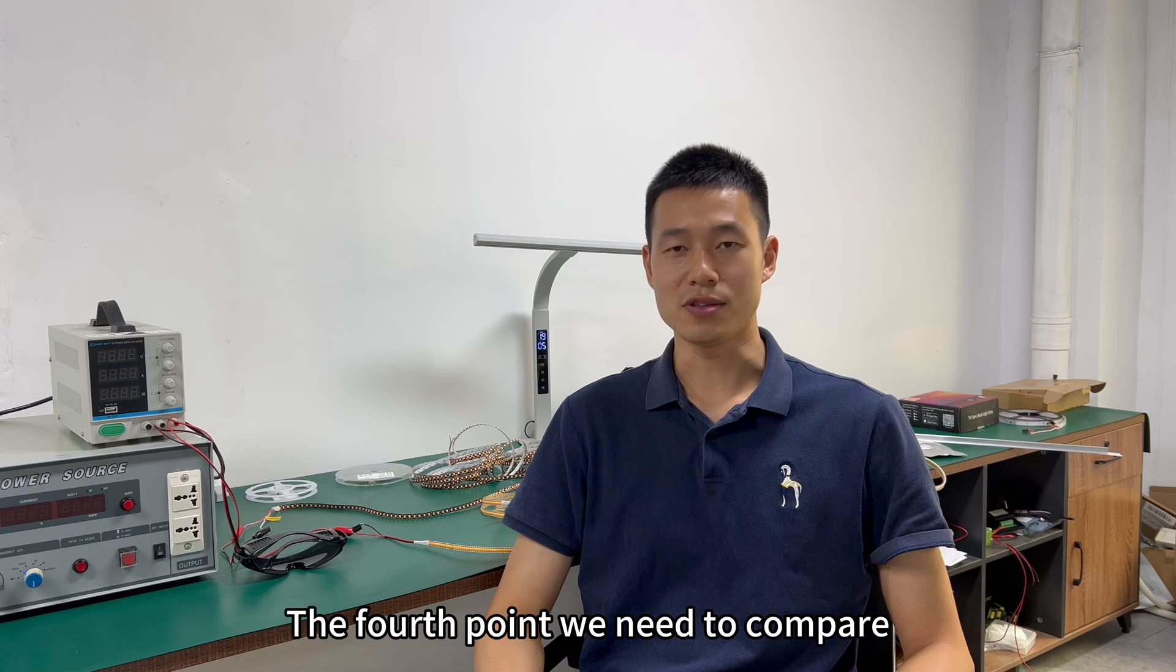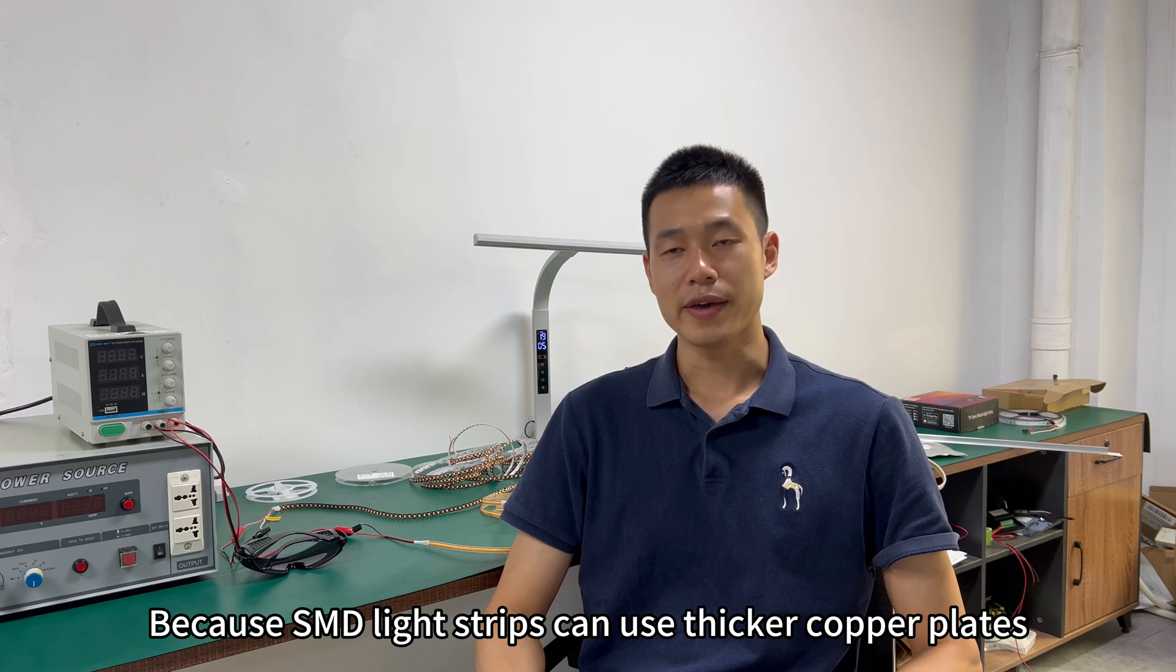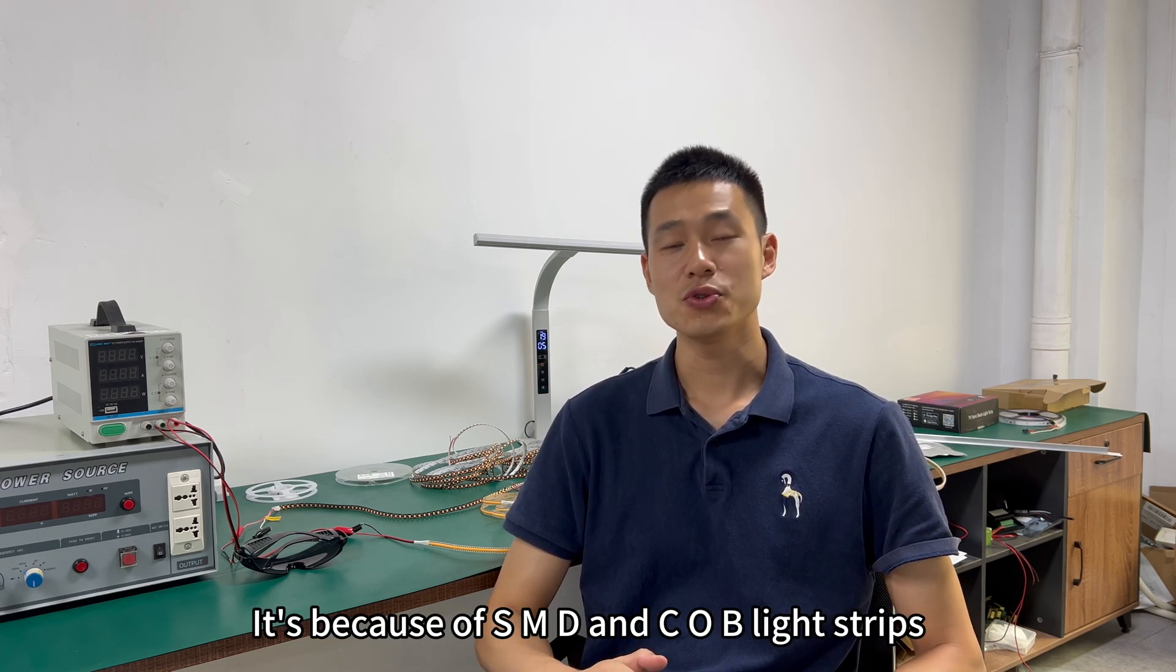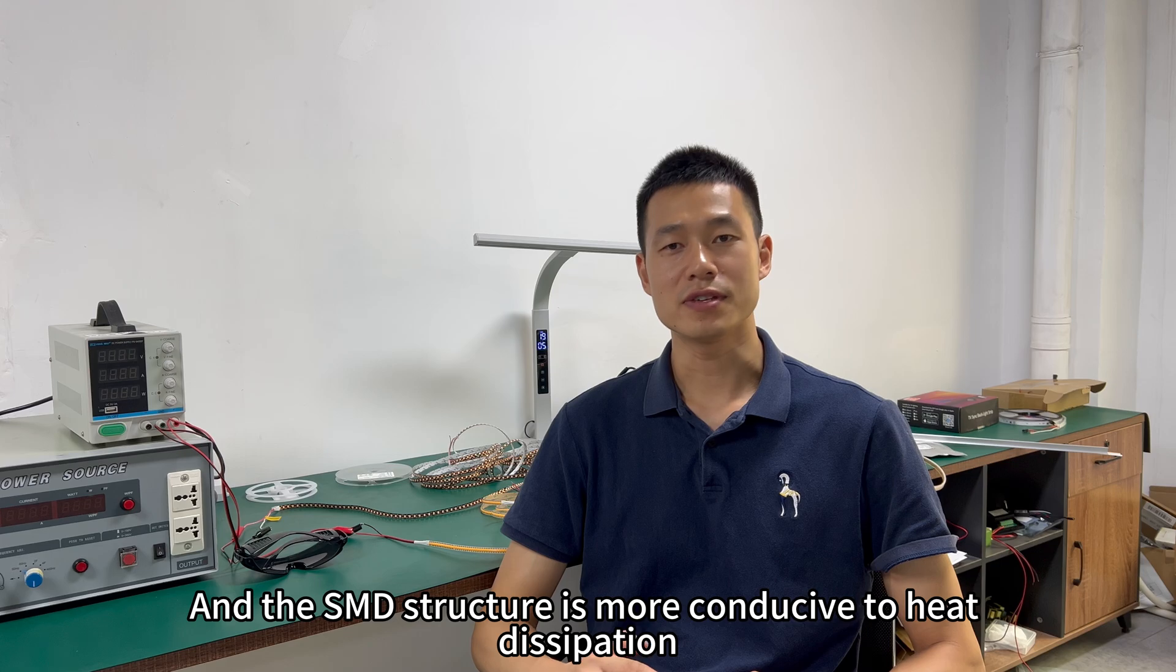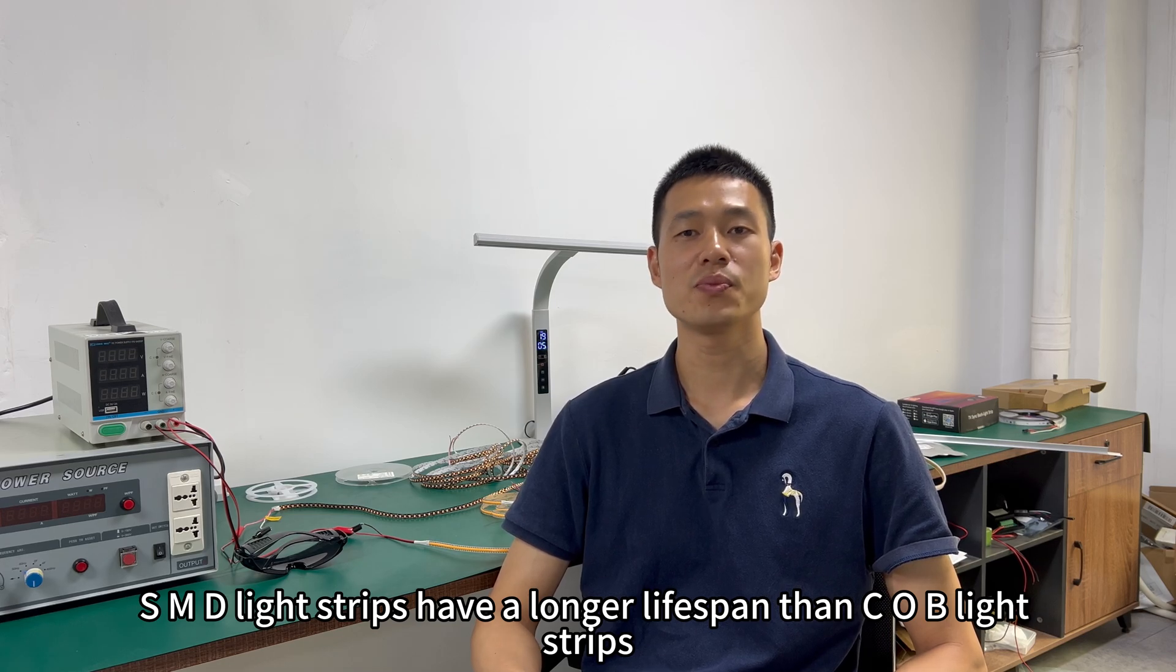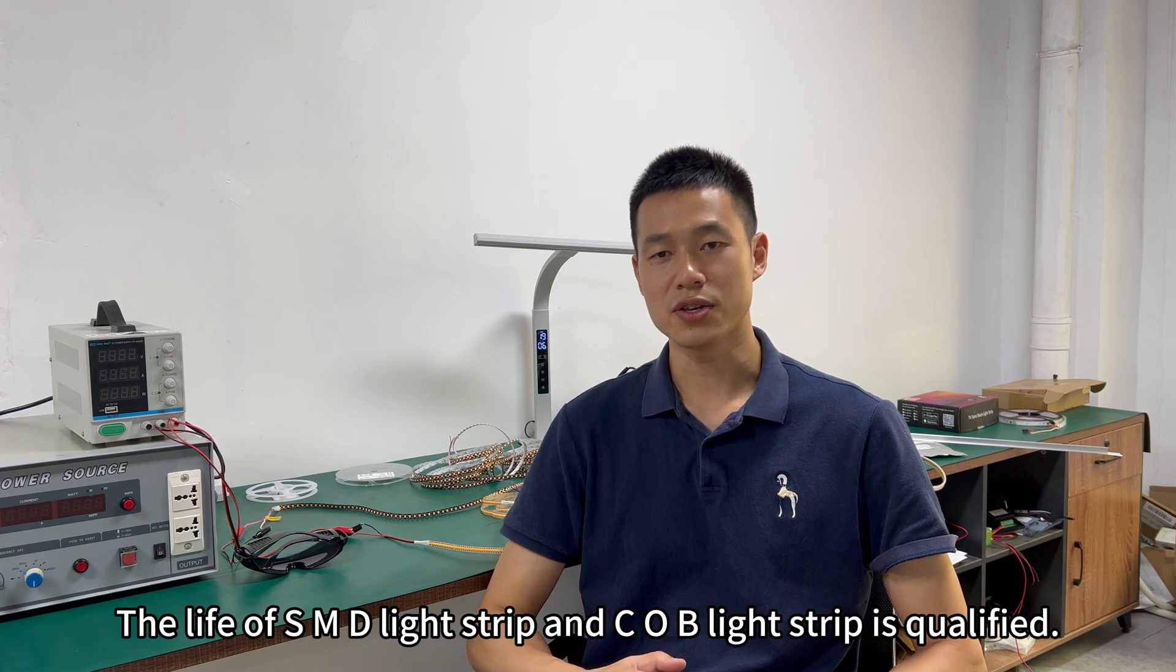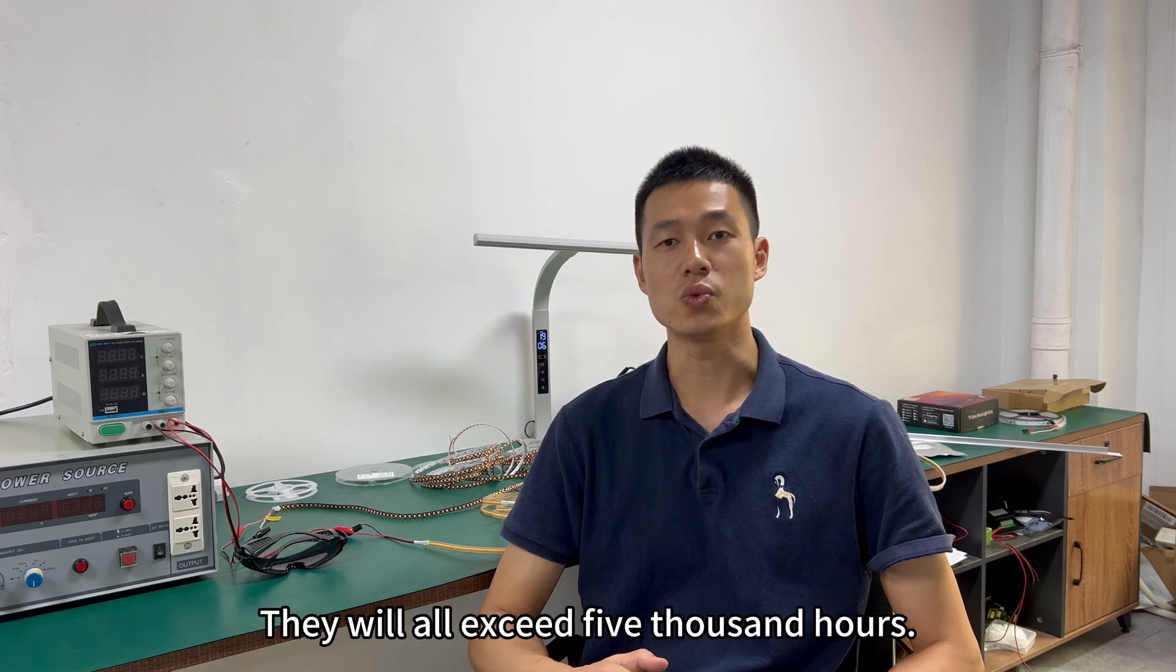The fourth point we need to compare is the lifespan of the SMD strip and the COB strip. Because SMD light strips can use thicker copper plates, so its heat dissipation will be better. On the other hand, it's because SMD and COB light strips have different structures, and the SMD structure is more conducive to heat dissipation. So under normal circumstances, we can say that SMD light strips have a longer lifespan than COB light strips. However, under normal circumstances, when the quality is qualified, the life of SMD light strip and COB light strip is qualified. They will all exceed 5,000 hours.